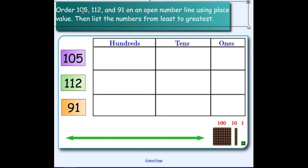Our task is to order 105, 112, and 91 on an open number line using place value, then list the numbers from least to greatest.